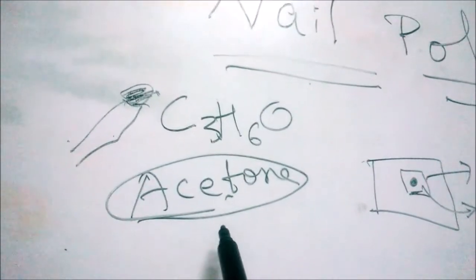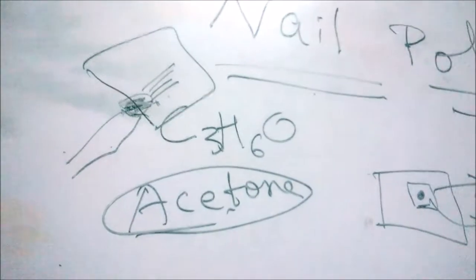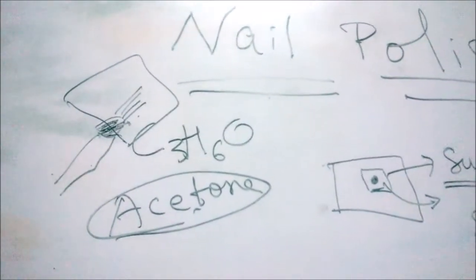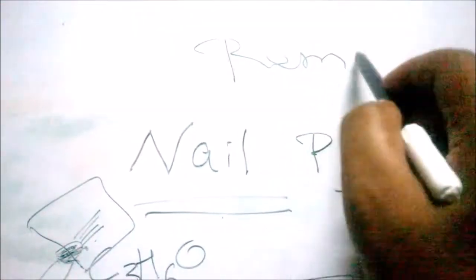So what we need is a nail polish remover which has acetone in it. We just need to apply the nail polish remover and the nail polish will get dissolved in it and it can be easily removed. So the chemistry behind this is that the nail polish is a stain and the nail polish remover is nothing but a solvent for the stain.